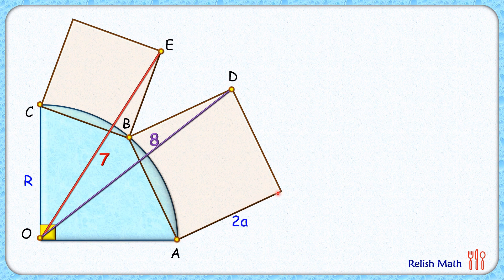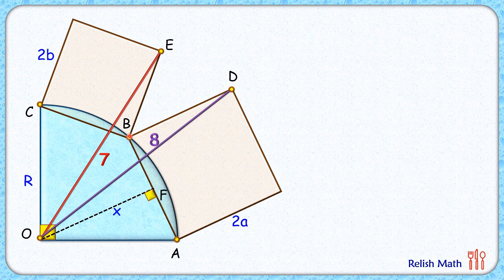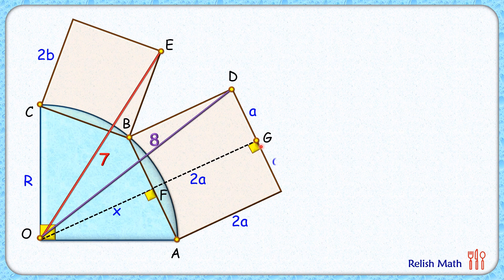The side length of the larger square is 2a centimeters and for the smaller square it's 2b centimeters. From point O, let's drop a perpendicular on AB. We know this perpendicular is also the bisector of the chord, so OF is the perpendicular bisector of AB. Let's assume OF has length x centimeters. Since it's a square, the perpendicular bisector of AB will also bisect the opposite side FG, giving lengths a and a.